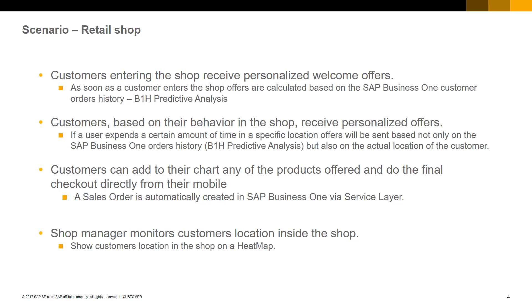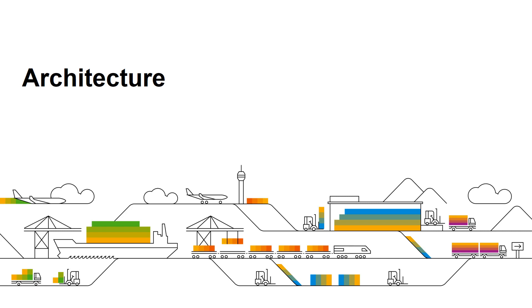On checkout, a sales order is automatically created in SAP Business One via service layer. The shop manager monitors customers' location inside the shop from a heat map. Let's have a look at the architecture.